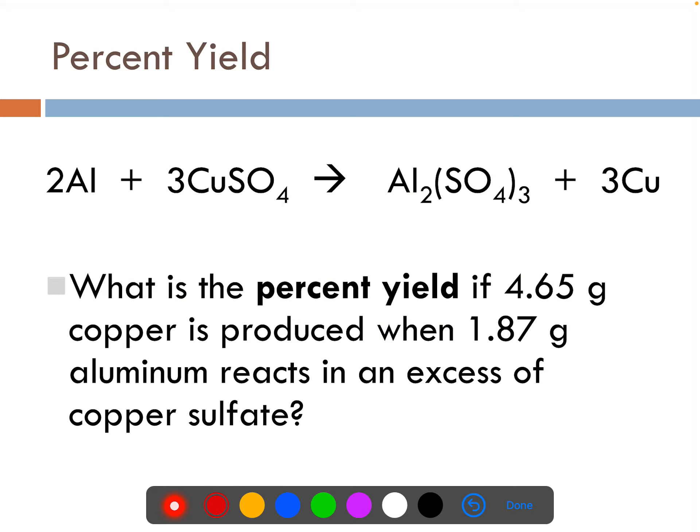Here's another example. What is the percent yield if 4.65 grams of copper is produced when 1.87 grams of aluminum reacts in excess of copper sulfate? Excess means we don't really have to think about it. We've got extra. It's like extra vinegar to our baking soda. We're putting in more than enough. So the only thing we need to think about in this case is the aluminum and how much copper we're going to make.